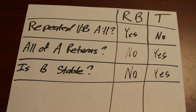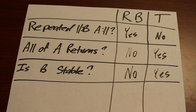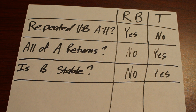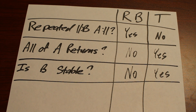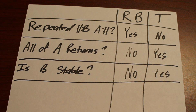So the three questions are: first, is the BA section repeated? Yes suggests rounded binary, no suggests ternary. Second, does all of A return? Yes suggests ternary, no suggests rounded binary. Third, how stable is B? A stable B section suggests ternary, while an unstable B section suggests rounded binary. Use these three questions and this chart to help you navigate whether something is rounded binary or ternary.